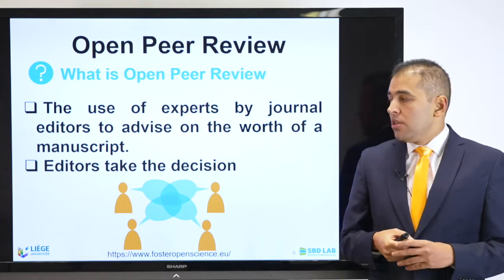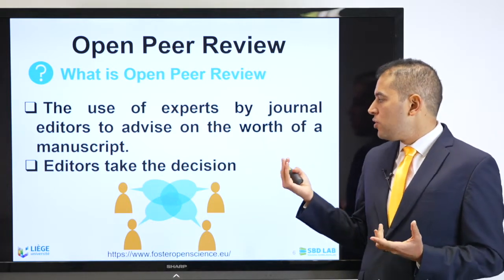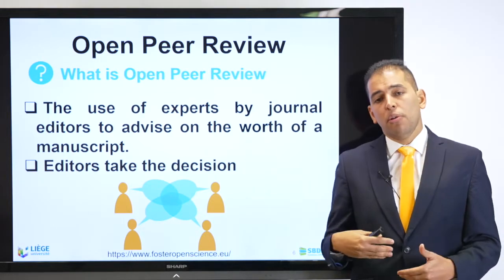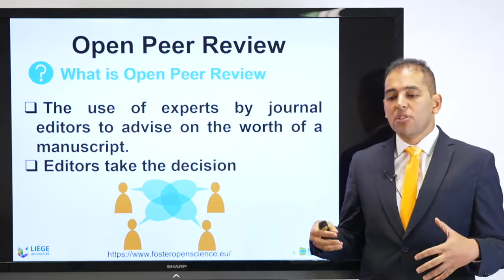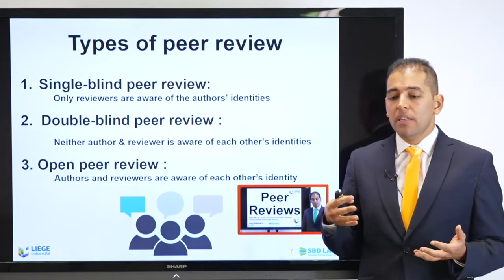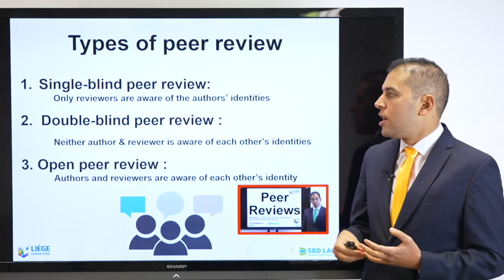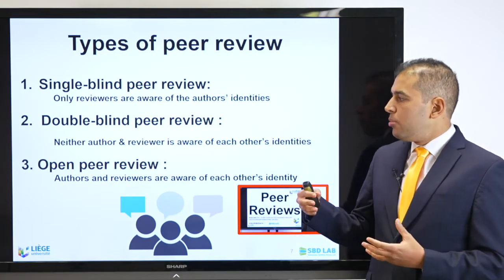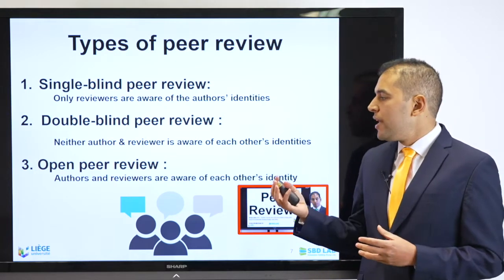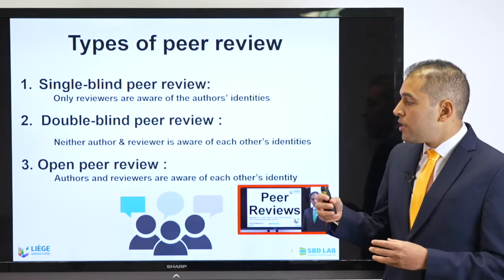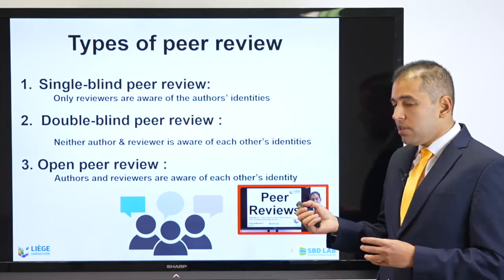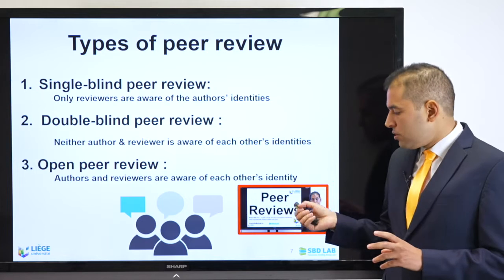What is Open Peer Review? The use of experts by journal editors to advise on the worth of a manuscript is mainly peer-reviewing. Editors take the decision of the reviewer as an external expert and make a decision based on that. In general, there are different types of peer review: single-blind peer review, where only reviewers are aware of the author's identity; double-blind peer review, where neither author nor reviewer is aware of each other's identity; and open peer review, where authors and reviewers are aware of each other's identity. If you want to know more about peer reviewing, I advise you to watch the video published previously.